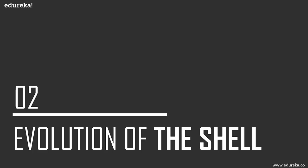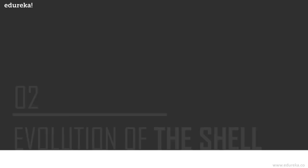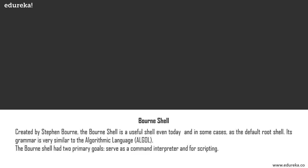Let's begin with a short history of the modern shells and then explore some of the useful and exotic shells available in Linux today. The shell or command line interpreter has a long history, but this discussion begins with the first ever Unix shell. Ken Thompson of Bell Labs created the first shell for Unix, called the V6, in 1971 — an independent user program that could be executed outside the kernel.